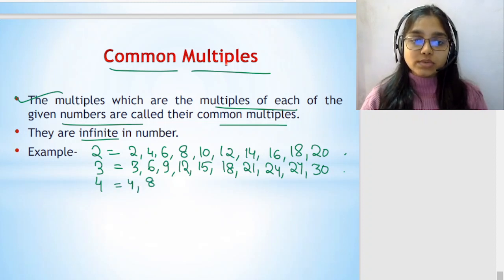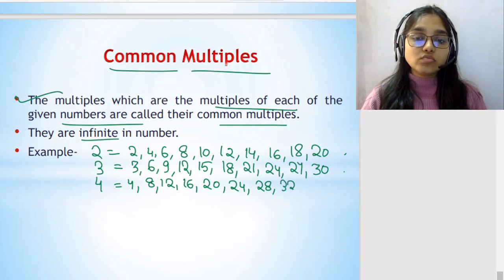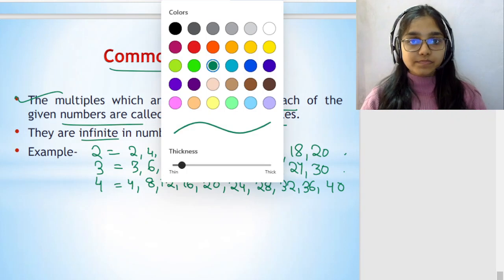4 into 1 is 4, 4 into 2 is 8, 4 into 3 is 12, 4 into 4 is 16, 4 into 5 is 20, 4 into 6 is 24, 4 into 7 is 28, 4 into 8 is 32, 4 into 9 is 36, 4 into 10 is 40.